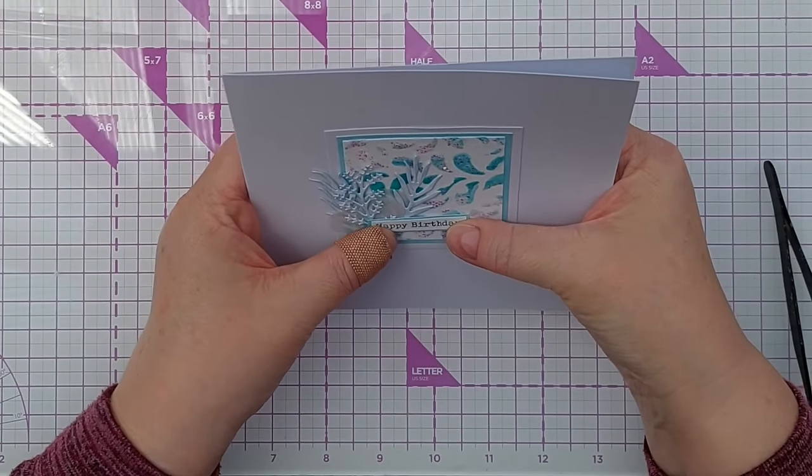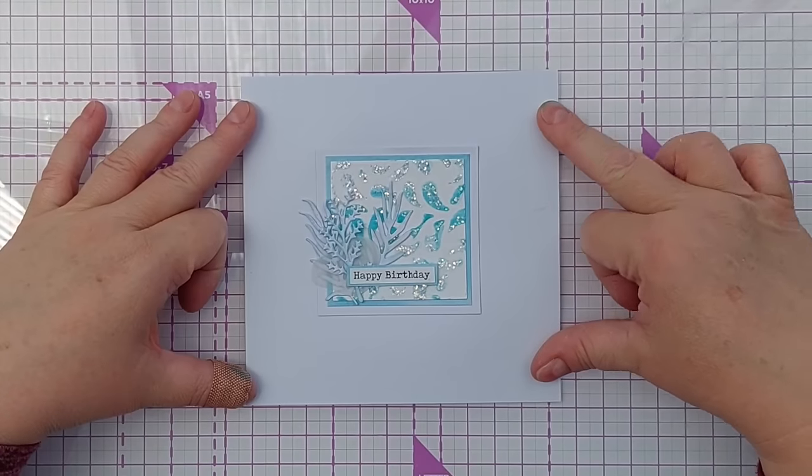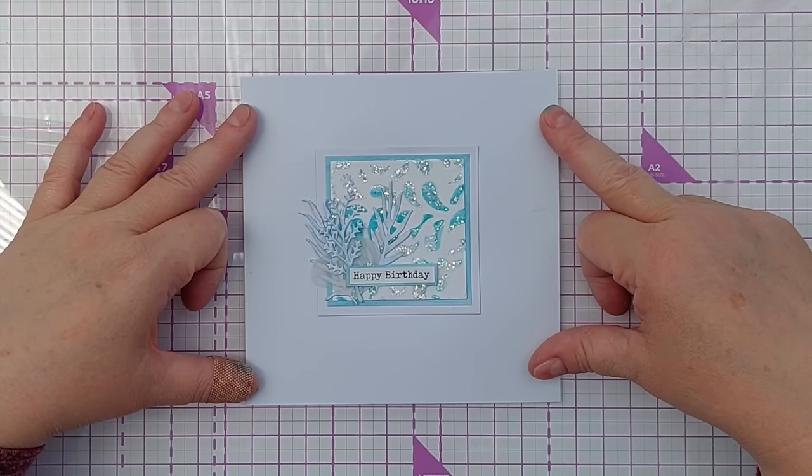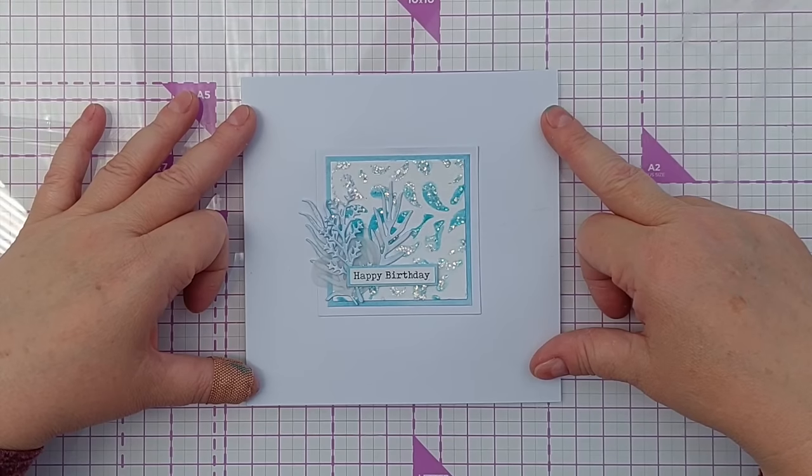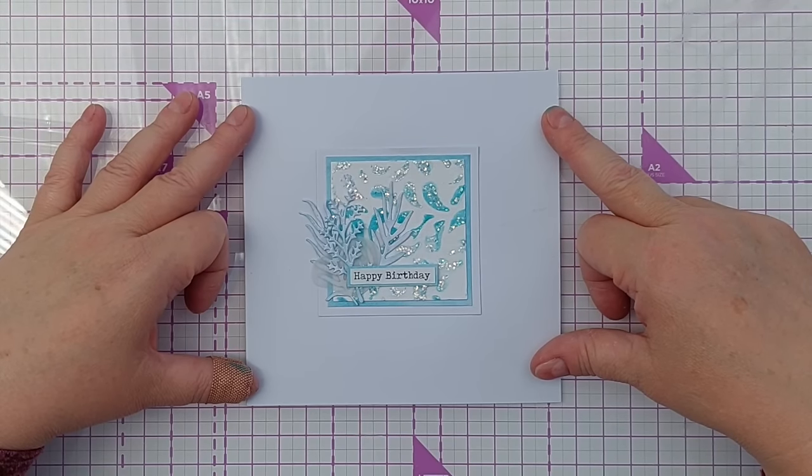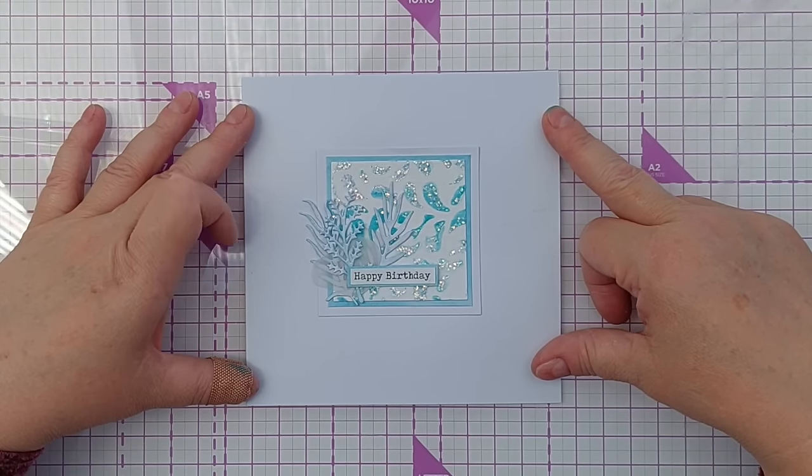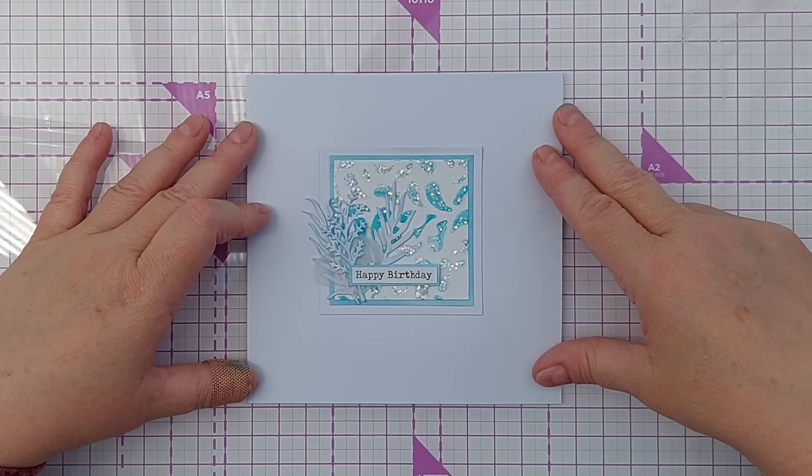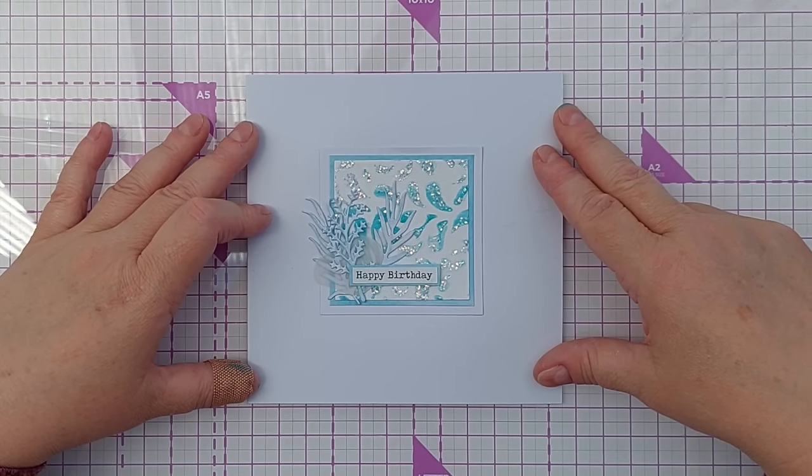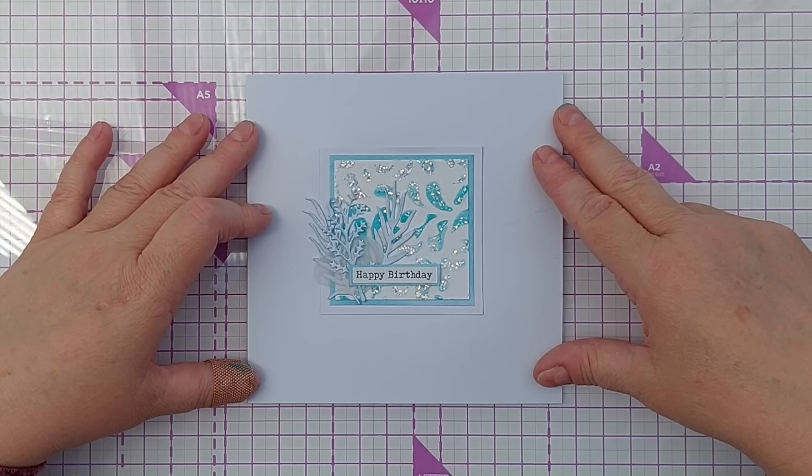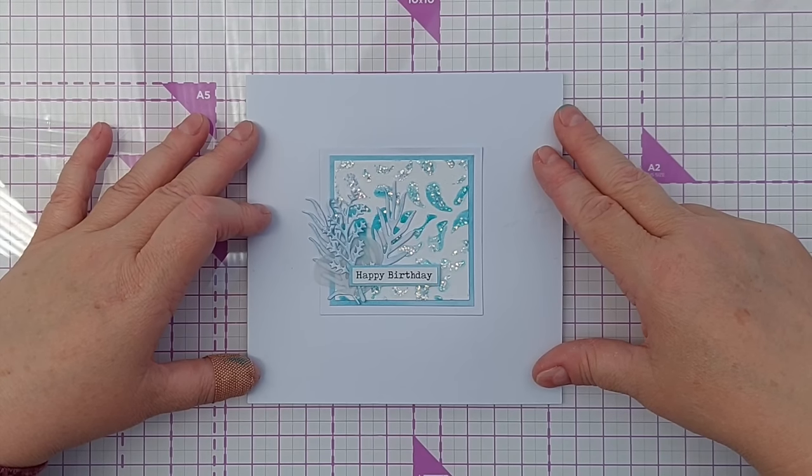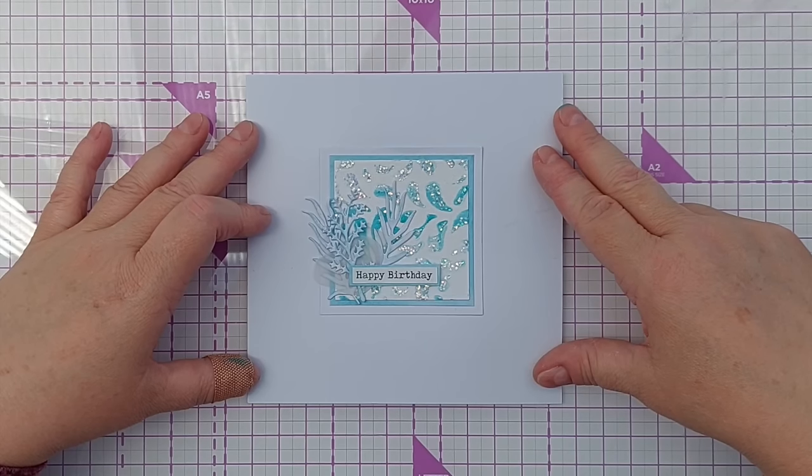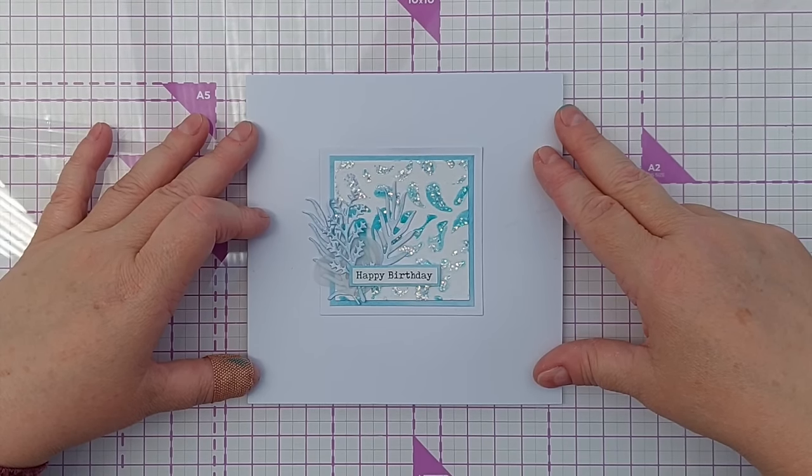I'm pretty happy with that. So there we go, one card made with homemade glimmer paste using luscious powders, glitter, and PVA glue. I hope you've enjoyed the video and that it's encouraged you to try making your own glitter paste. If it has, come to my Facebook group and share your creations. Please like, subscribe, and ring the notification bell. I'll see you back here very soon. Thanks for watching, bye for now.